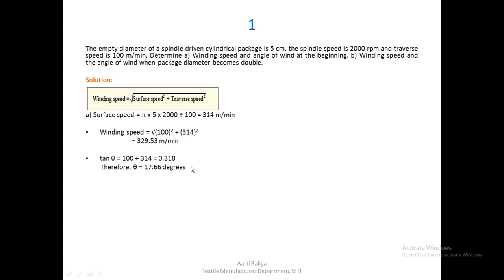tan θ can be calculated as traverse speed upon surface speed, which gives 0.318. Taking tan inverse of this value, we get θ = 17.66 degrees as the angle of wind.